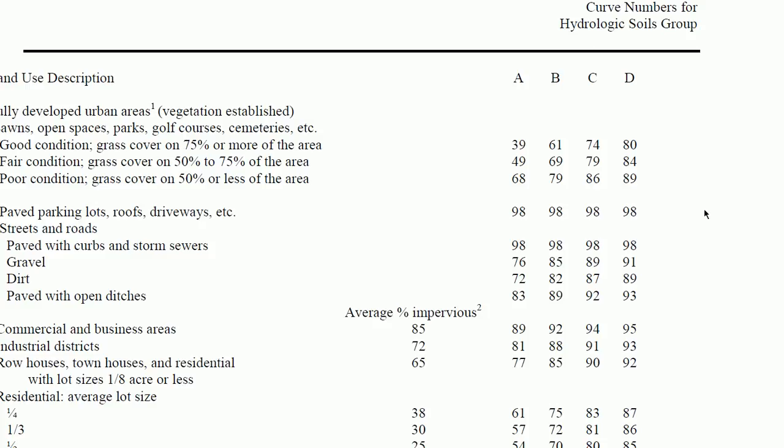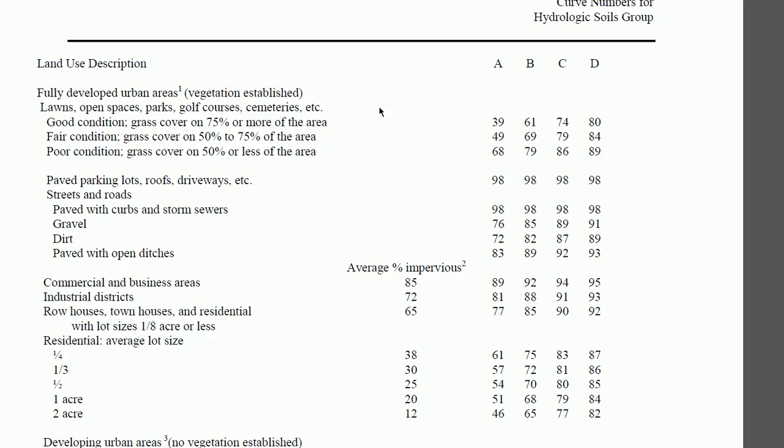But here's a quick example, or an example of a curve number chart. Here you'll have, over here you'll have a land use description, so it'll tell you what type of land it is. Notice that you have your good condition, your fair condition, your poor condition. Remember, if you don't know the hydrologic condition, you can assume it to be fair. And then up here you have A, B, C, and D. And these are your different soil groups that we talked about in a couple videos previously.